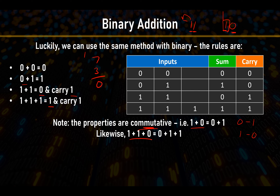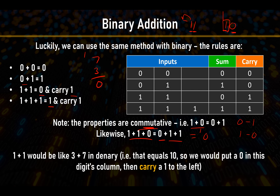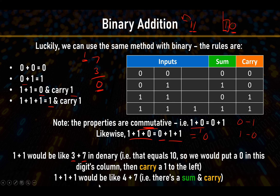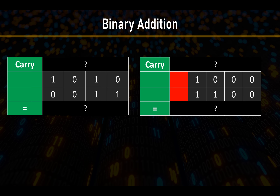For example, one plus one plus zero equals zero with a carry of one. One plus one is equivalent to three plus seven in decimal — sum of zero, carry of one. One plus one plus one is like four plus seven — sum of one, carry of one. So three in binary: sum is one, carry is one. Let's practice some of these.